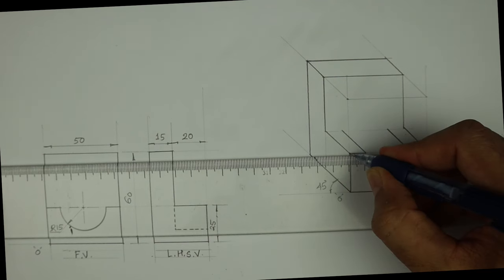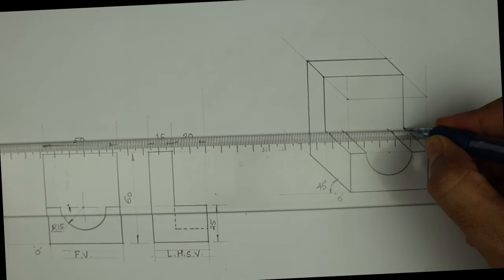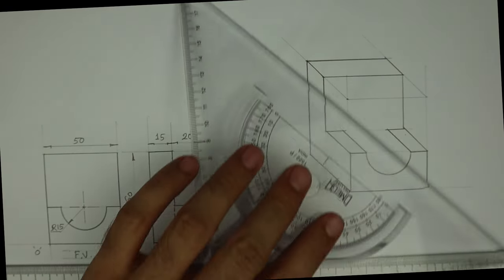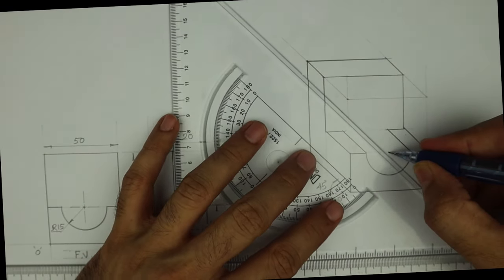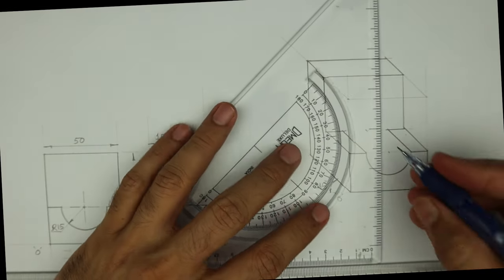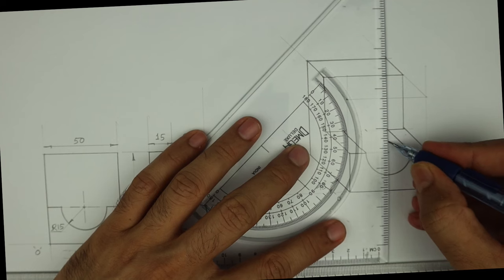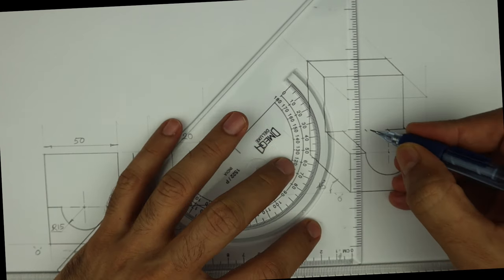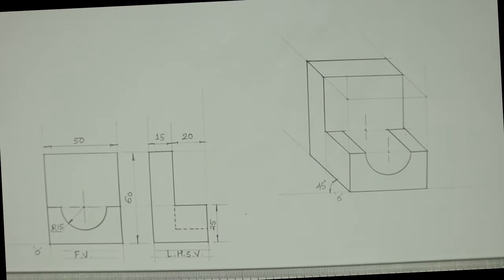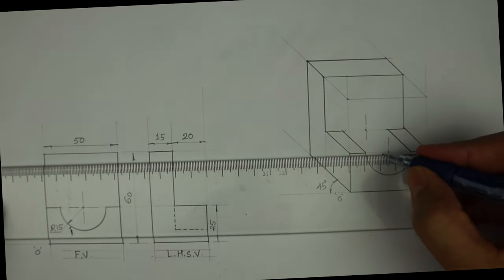This will be down. Now I need to mark center of the circle behind also. This is axis, this is axis.